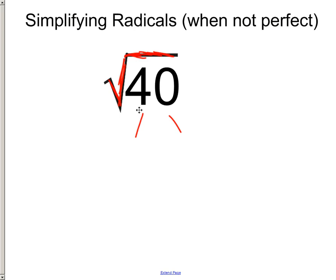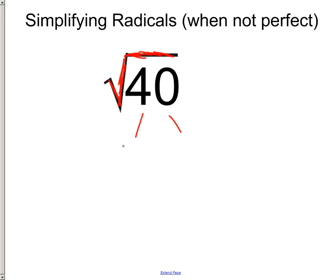So what can we do with the 40? The first thing I tell my students is just think of two numbers that you can multiply together to get 40. It does not matter what it is, as long as you don't use 1 and 40 — that doesn't help us. Use any other two numbers: it could be 8 and 5, it could be 2 and 20, it could be 10 and 4. Let's just use 10 and 4.